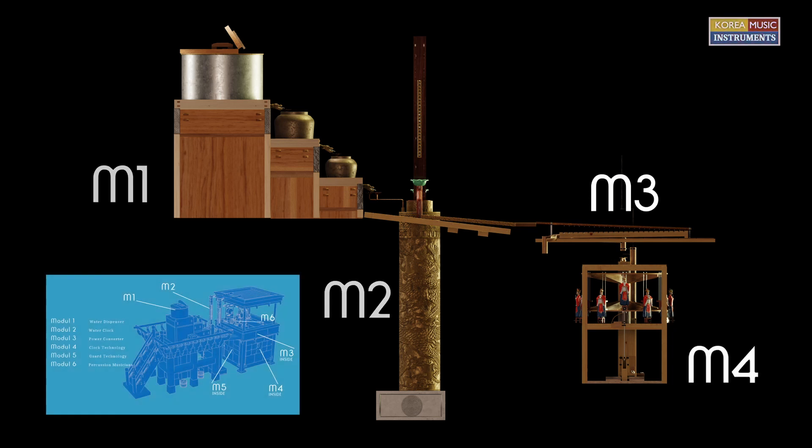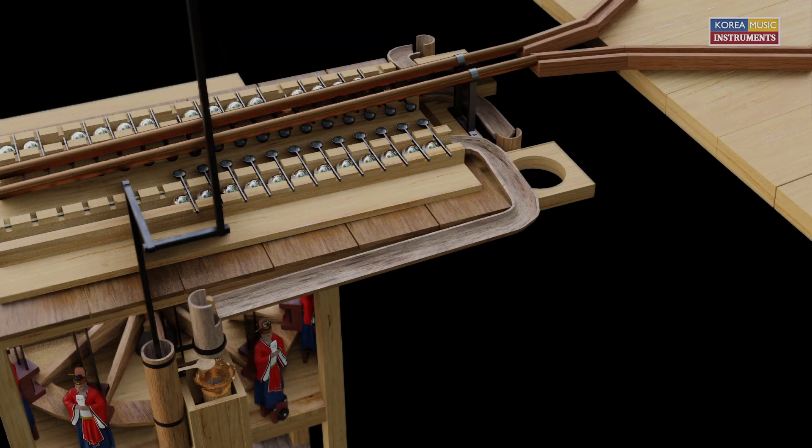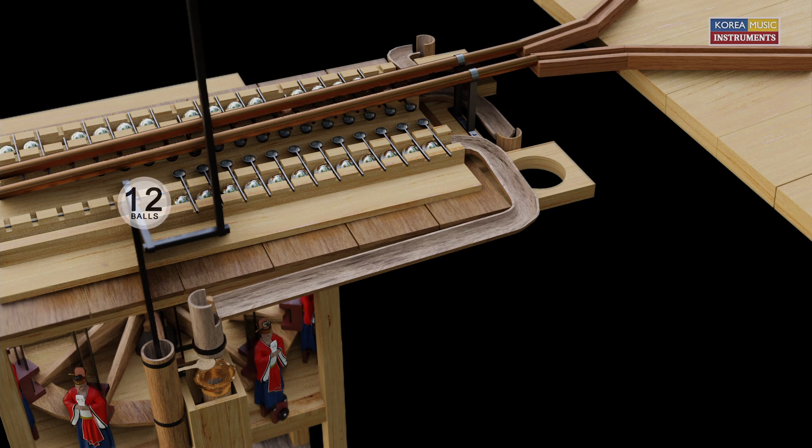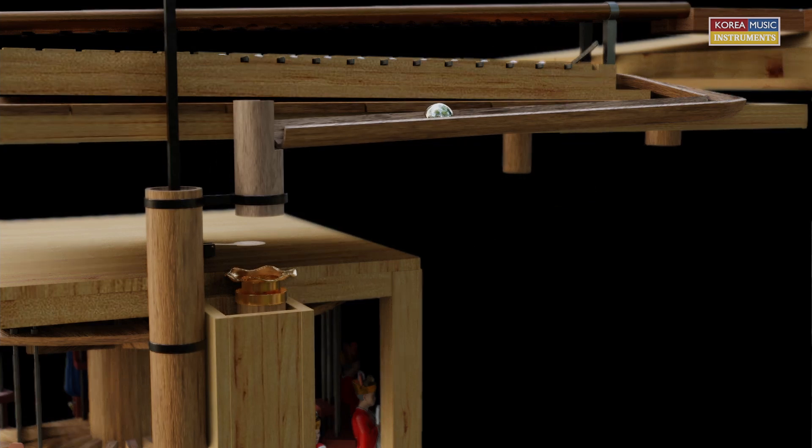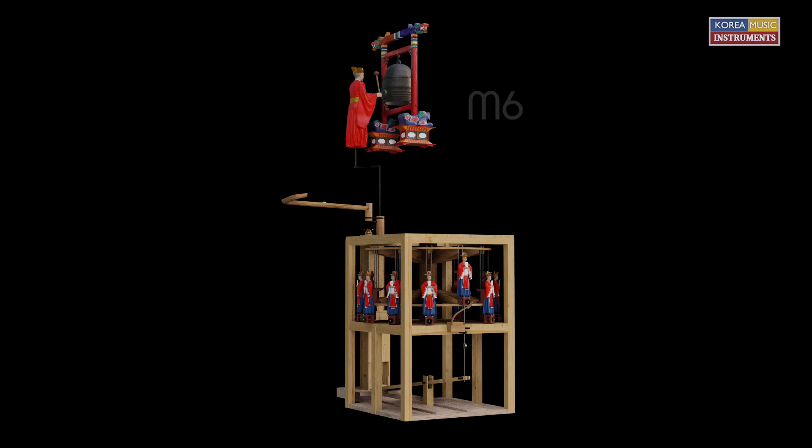Module 4. Module 4 is activated by the 12 double-hour balls from module 3. One ball is released every 2 hours. This ball activates several mechanisms at the same time. The bell player and the wooden puppets are activated by this ball.